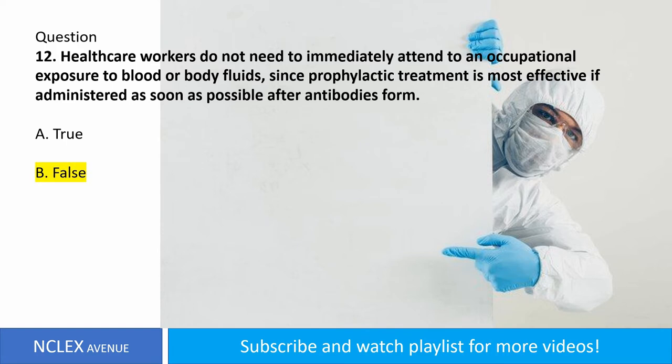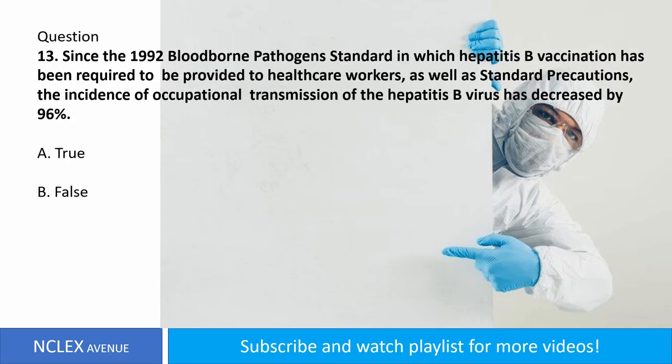Question number thirteen. Since the 1992 bloodborne pathogen standard, in which hepatitis B vaccination has been required to be provided to healthcare workers as well as standard precautions, the incidence of occupational transmission of the hepatitis B virus has decreased by 96%. A. True. B. False. Answer: letter B. False.